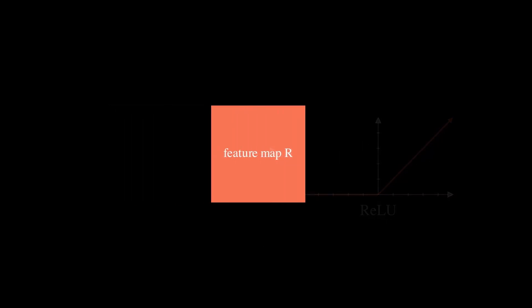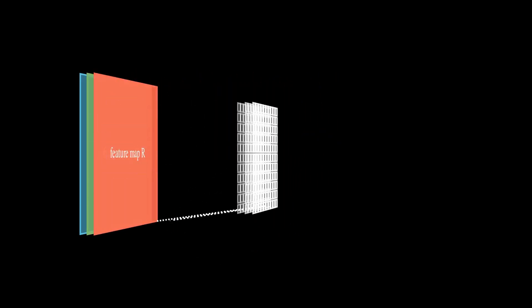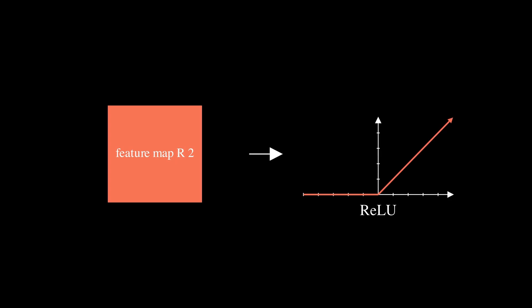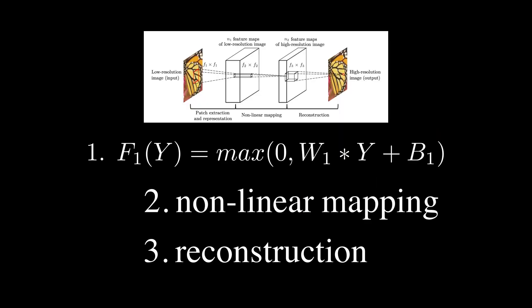The nonlinear mapping phase converts the N1-dimensional features we found previously to N2-dimensional ones. This is more difficult to understand conceptually, but it's safe to say that the features produced in this phase are N2-dimensional representations of high-res patches of the input image. The mapping process is defined by the following equation.